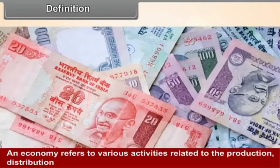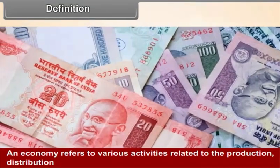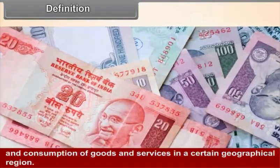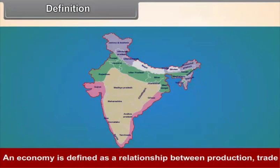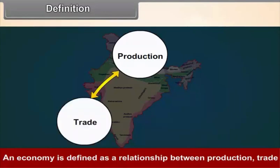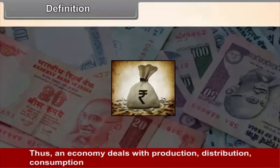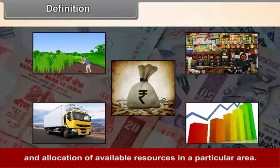Definition: An Economy refers to the various activities related to production, distribution, and consumption of goods and services in a certain geographical region. An Economy is defined as a relationship between production, trade, and the supply of money in a particular country or region. Thus, an Economy deals with production, distribution, consumption, and allocation of available resources in a particular area.